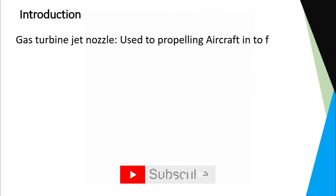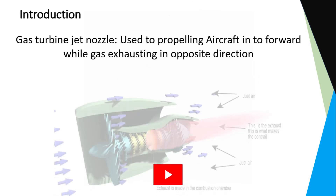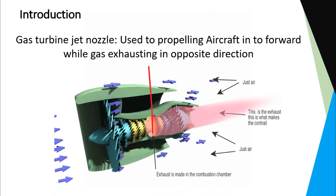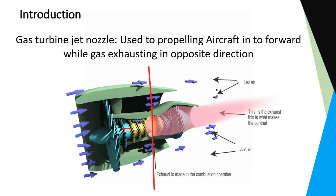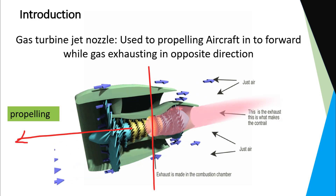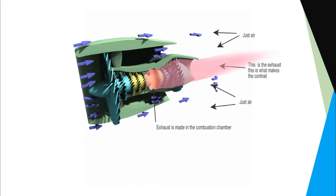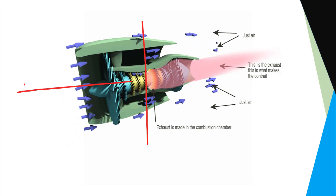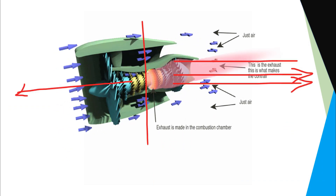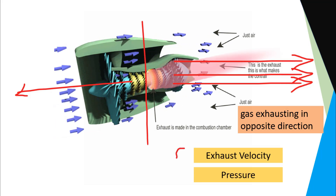All jet engines, whether they power aircraft or other vehicles, have exhaust systems with varying levels of complexity. These systems are crucial for guiding the exhaust gases from the engine's turbine to the atmosphere. It's the velocity and pressure of these exhaust gases that generate the thrust needed to propel an aircraft forward.